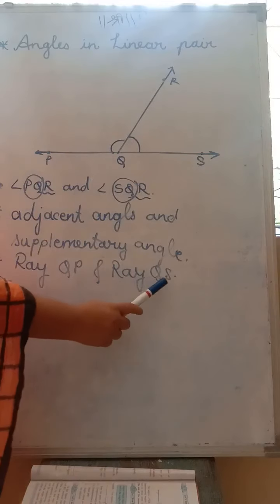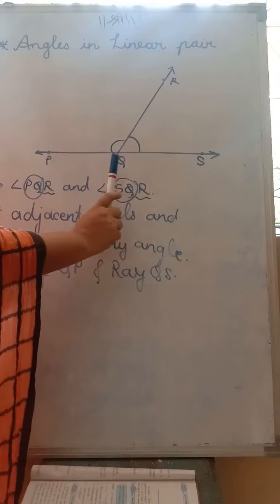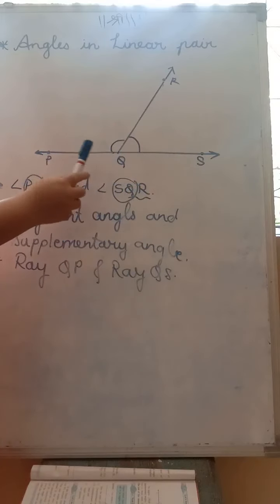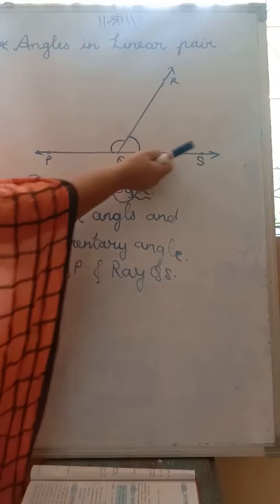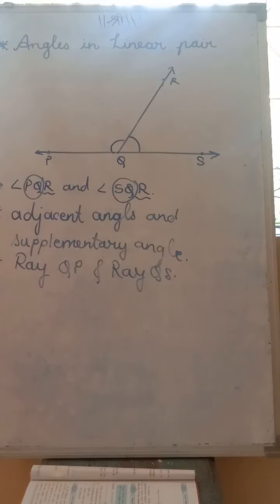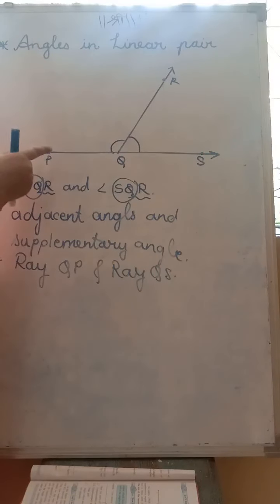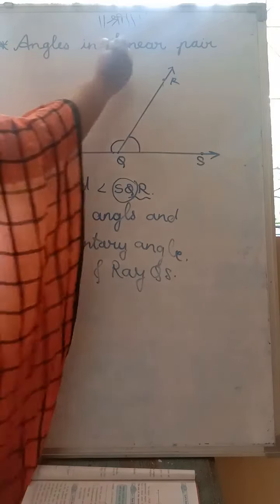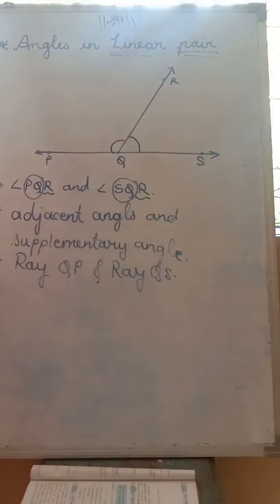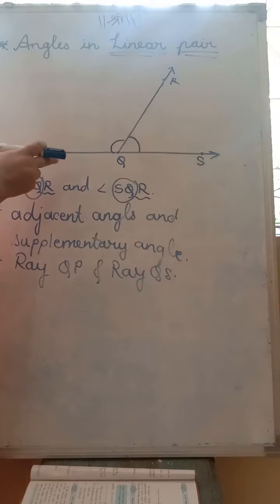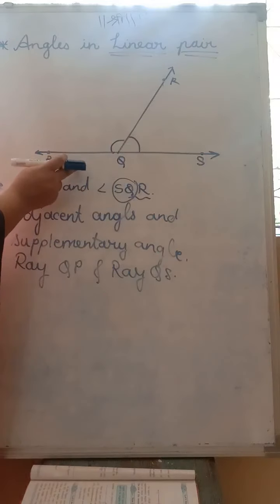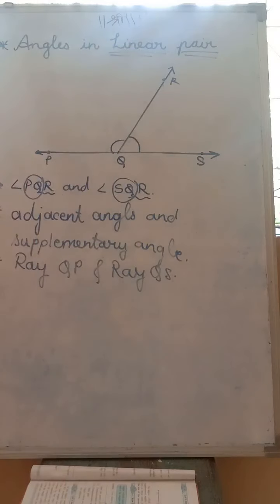Ray QP and ray QS are not common — they are different arms. But if you look at the diagram, they are opposite rays, so they form a pair of opposite rays and because of that a straight line is formed. These angles form a linear pair. The angles which are adjacent, supplementary, and whose non-common arm forms a straight line — such angles form a pair of linear pair.